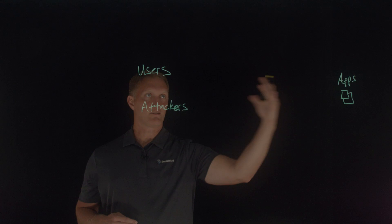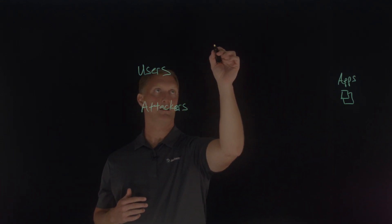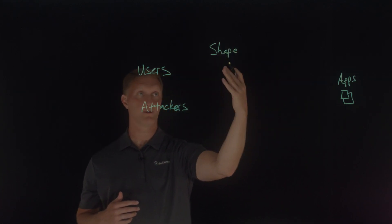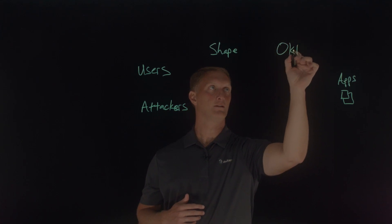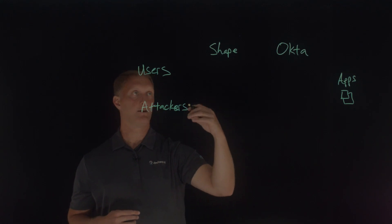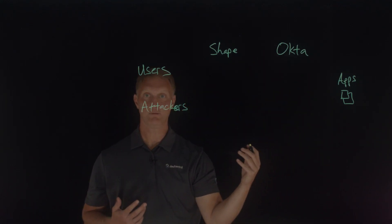And so the way that this solution is built is that Shape is introduced first into the equation, or that would be the first stopping point, if you will. And then Okta would also be here. So Shape provides that bot protection, and then Okta provides that identity and access management solution.